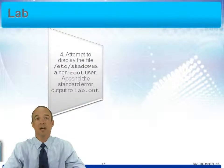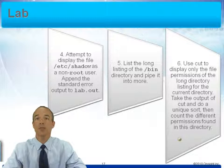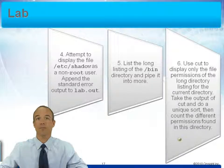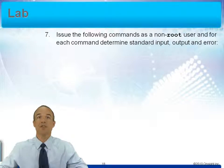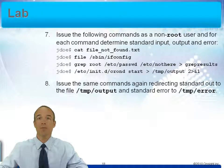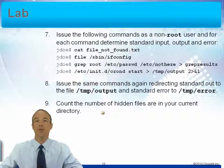Step four: attempt to display /etc/shadow as a non-root user and append the Standard Error output to lab.out. Step five: list the long listing of /bin and pipe it into more. Step six: use cut to display only the file permissions of the long directory listing for the current directory, do a unique sort, then count the different permissions found. Step seven: issue specified commands as a non-root user and determine Standard Input, Output, and Error. Step eight: reissue those commands redirecting Standard Out to /tmp/output and Standard Error to /tmp/error. Step nine: count the number of hidden files in your current directory.